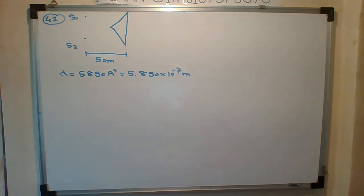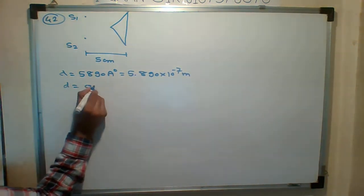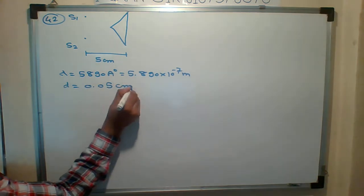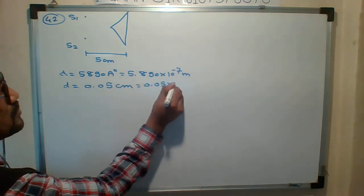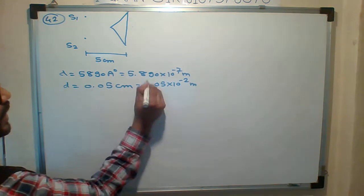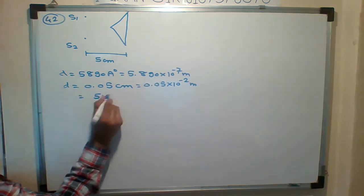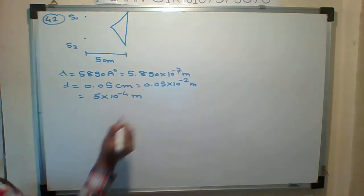And the distance between the virtual sources is found to be... So small d is given: 0.05 into 10 to the minus 2 in meter. If we shift the point, 5 into 10 to the minus 4 in meter.